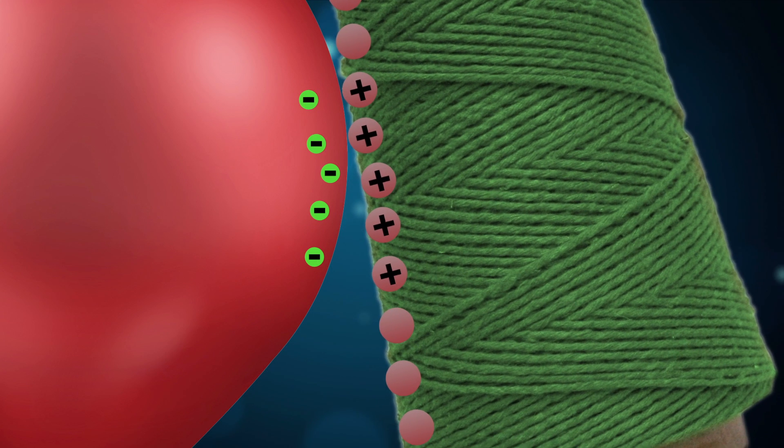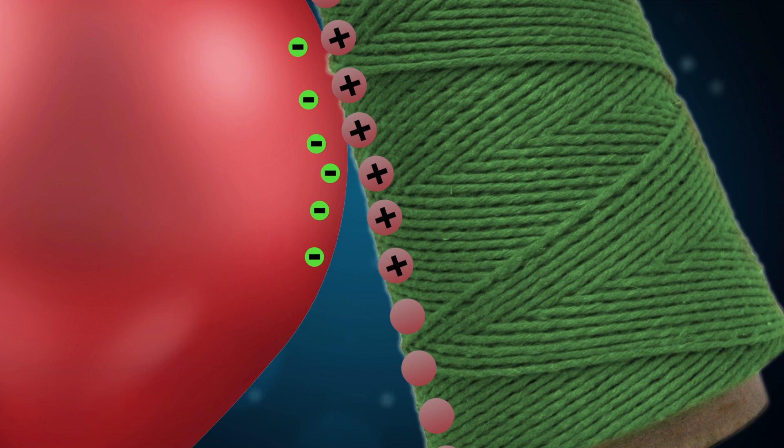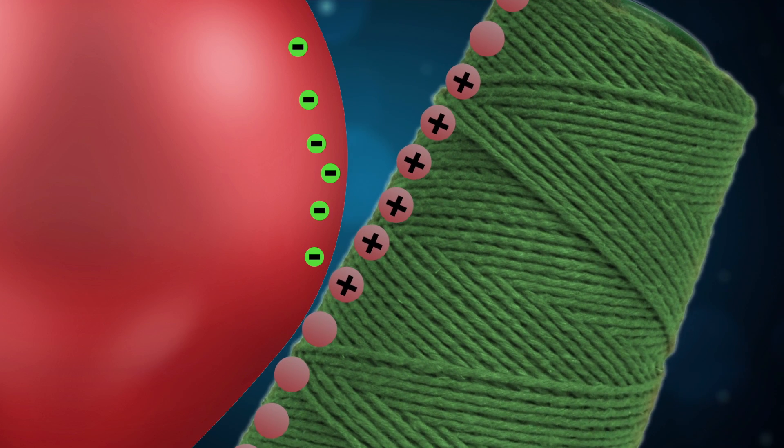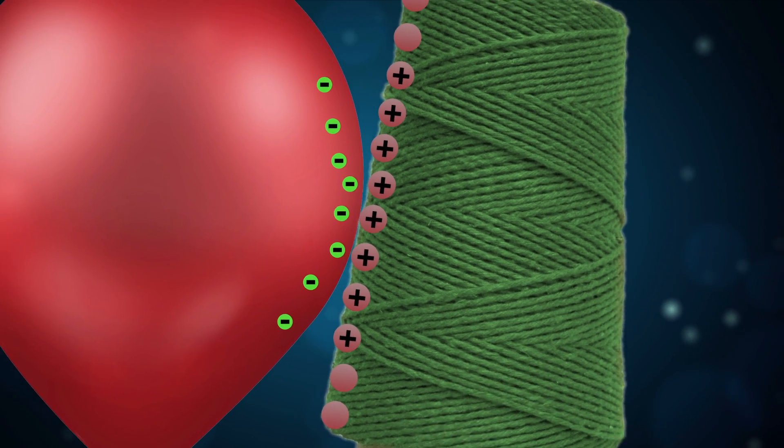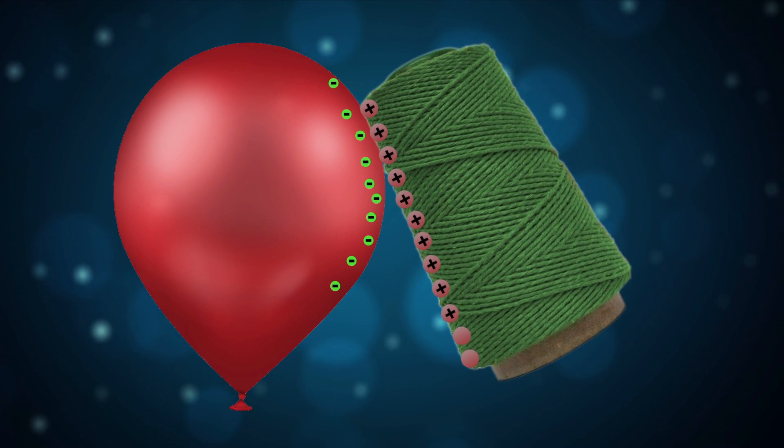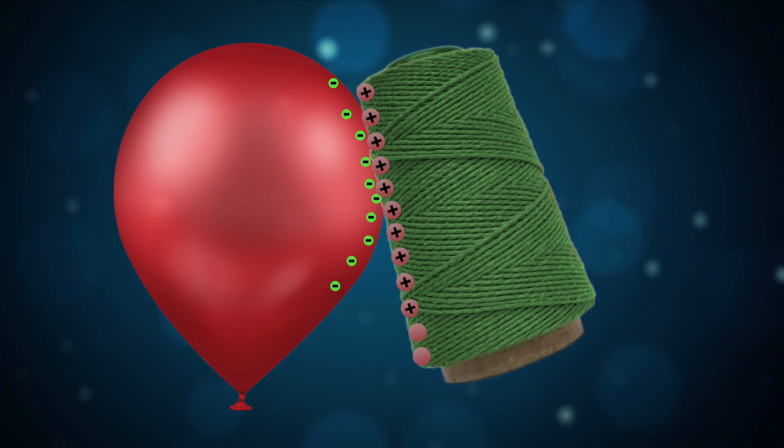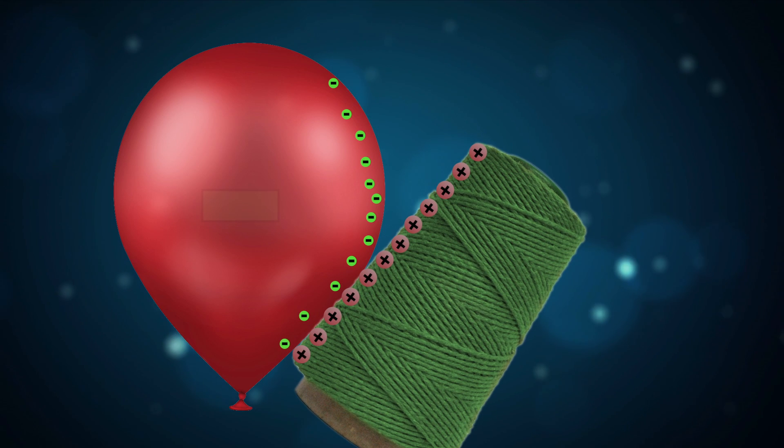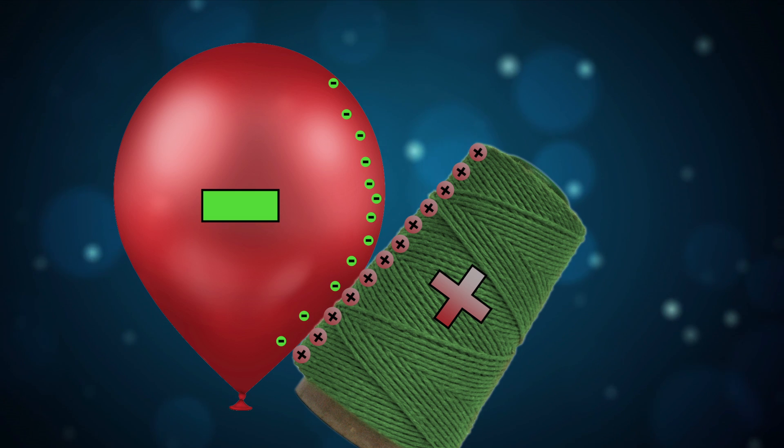Therefore, the electrons that traveled between the two objects built up on the surface. When the wool was rubbed on the balloon, electrons transferred to the balloon, giving it a negative charge. The electrons that broke away from the atoms on the surface of the wool left positive ions, giving the wool a positive charge.